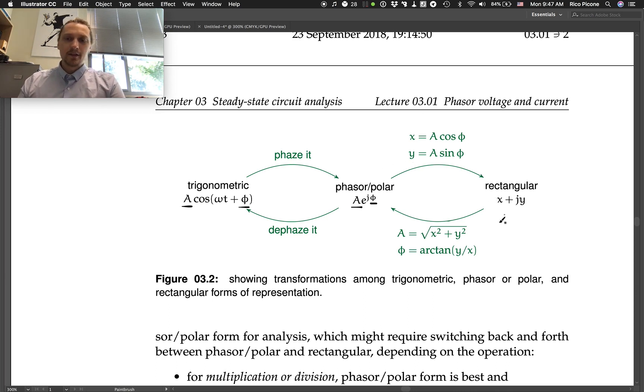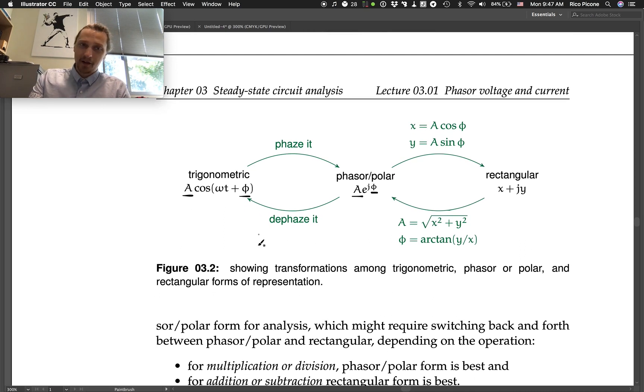To rectangular, and then back, and then you're working in this complex number representation. And if, at the end you would like to go back, we don't always want to go back, but oftentimes we do want to go back to trigonometric form. We could say we de-phase it, we take the amplitude back out, and the phase back out. So, that's kind of the idea.